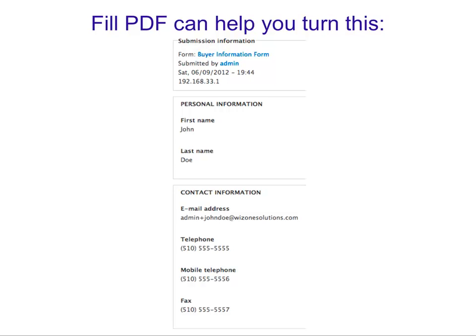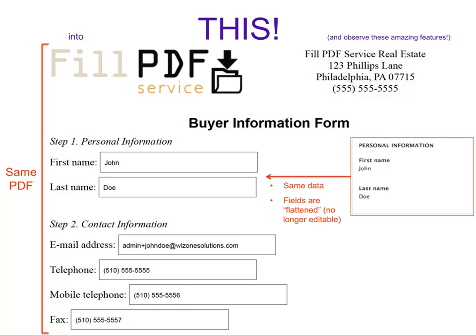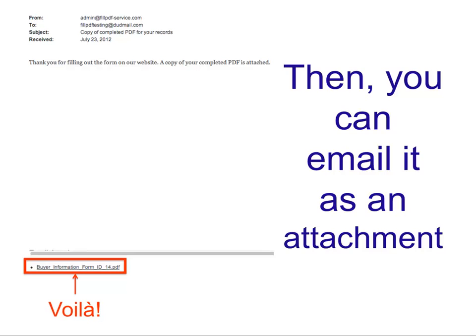What Fill PDF does is help you turn a web form submission into a filled PDF. It's the same PDF as we saw before, it's got the data in it now, and you can't edit the fields anymore - you notice they're not blue. You can also email it as an attachment, although it requires some setup. That's really the coolest part, because before you couldn't actually do it at all.